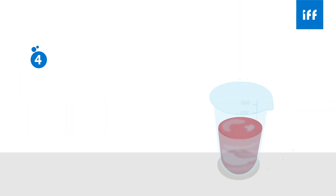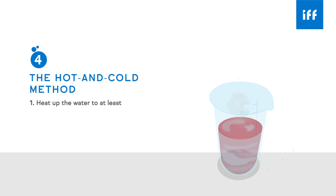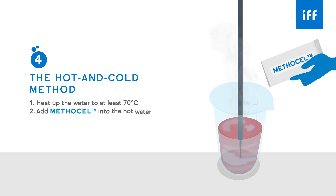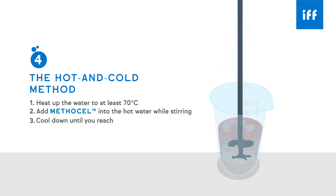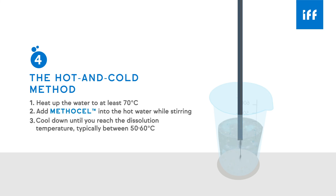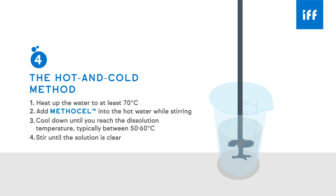The fourth method is called the hot and cold method. Heat up the water to at least 70 degrees centigrade. Add Methylcell to the hot water while stirring — Methylcell will disperse into the hot water but will not solubilize. Cool down the solution until you reach the dissolution temperature, typically between 50 and 60 degrees centigrade. During the cooling process, particles will dissolve and form a viscous and clear solution.